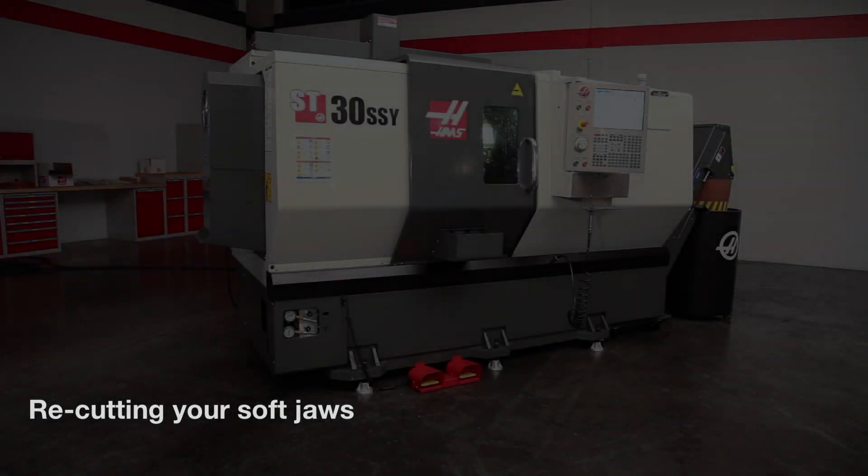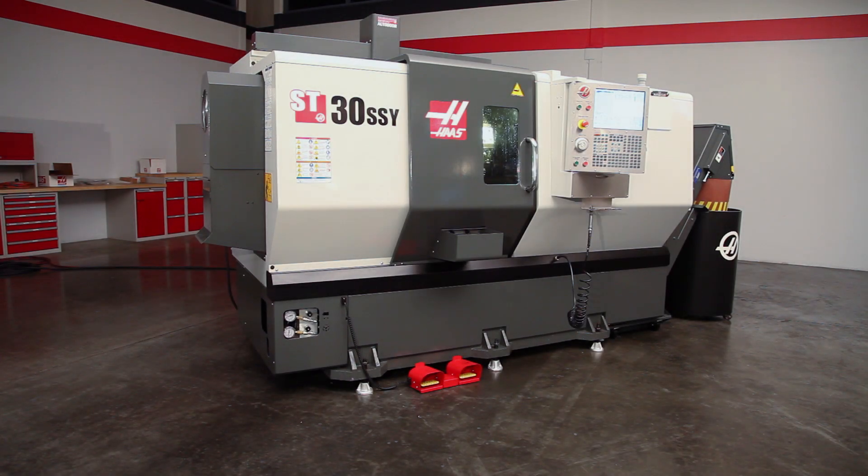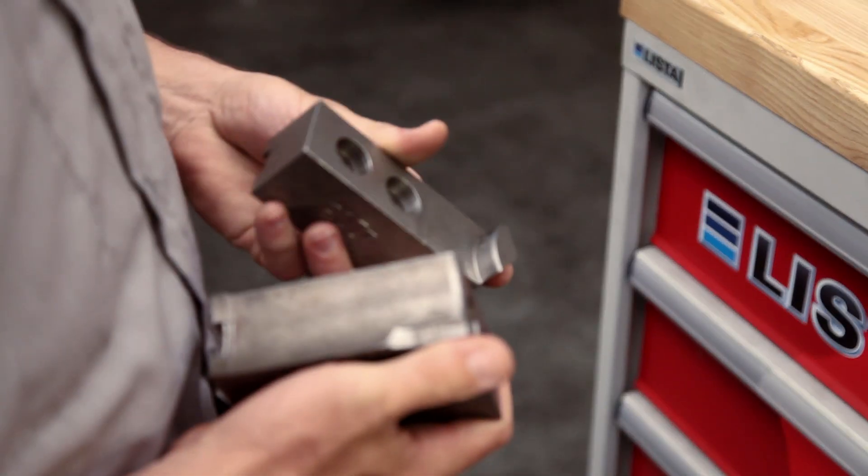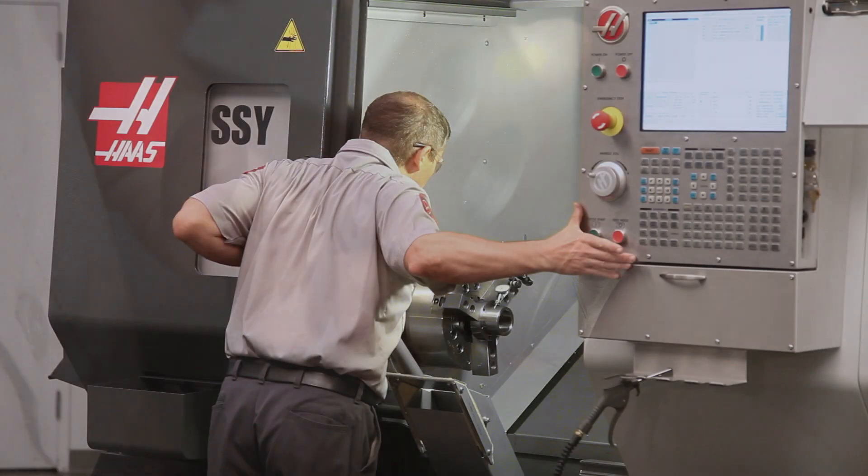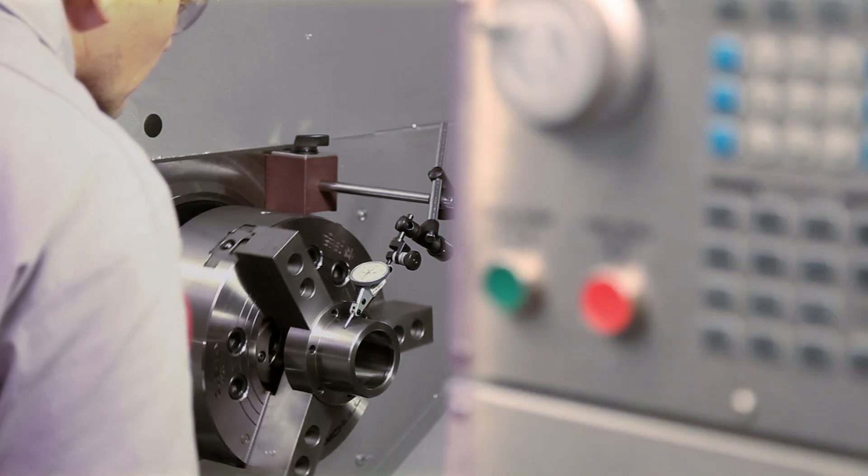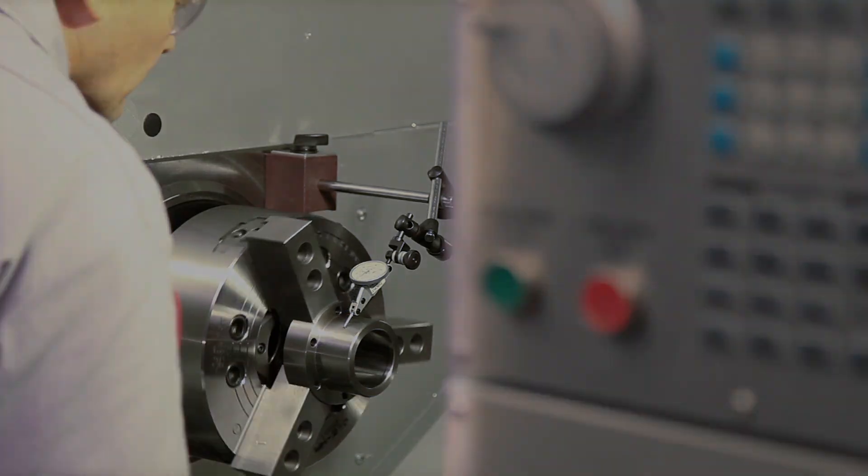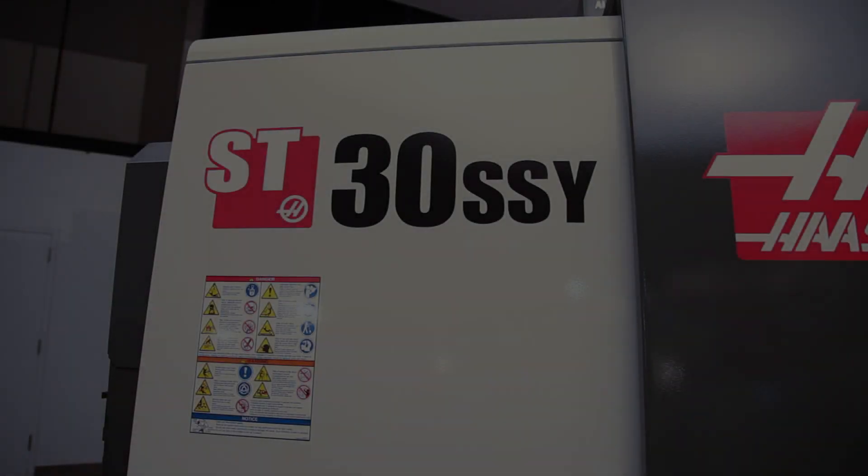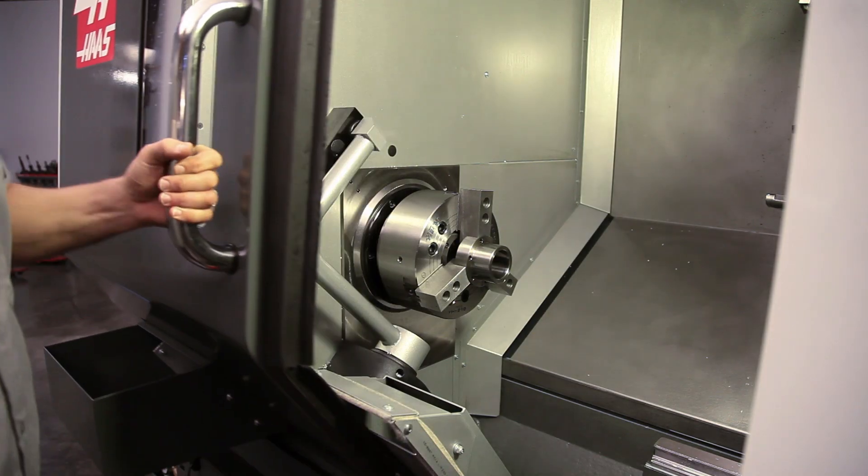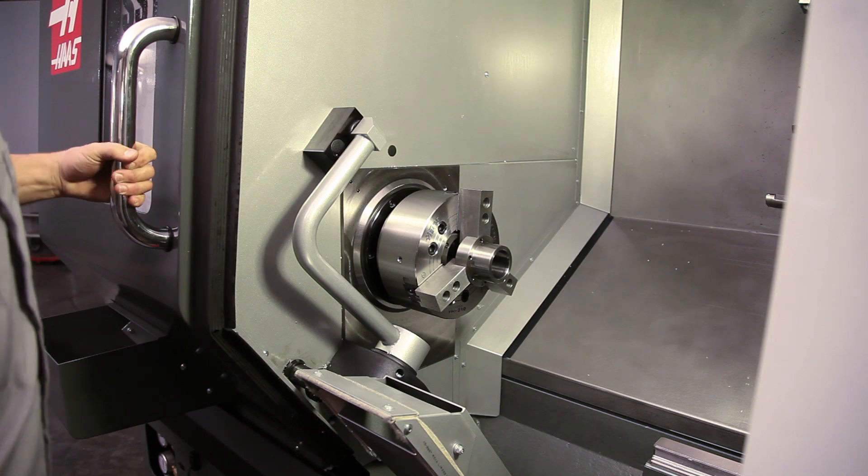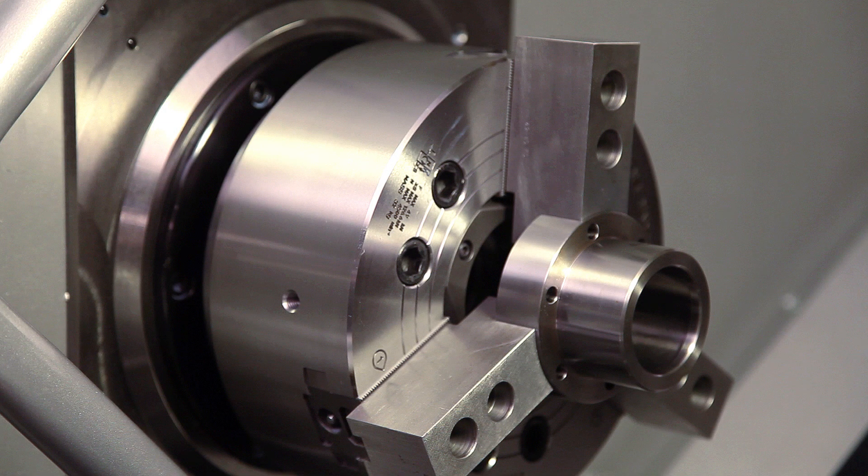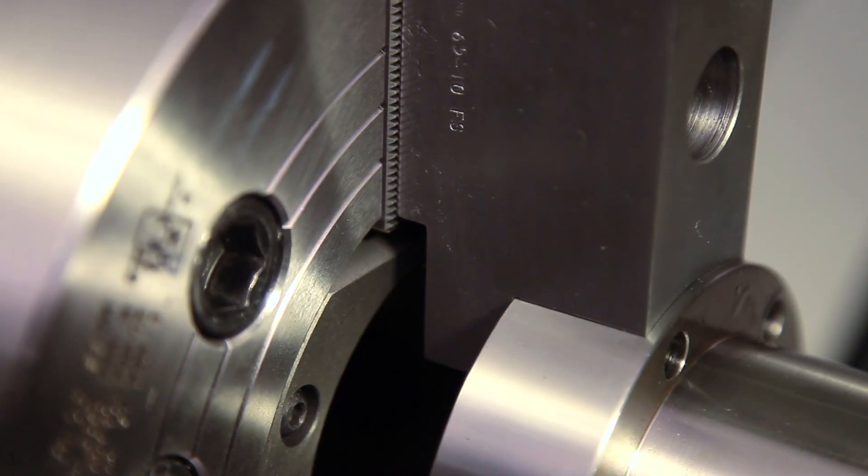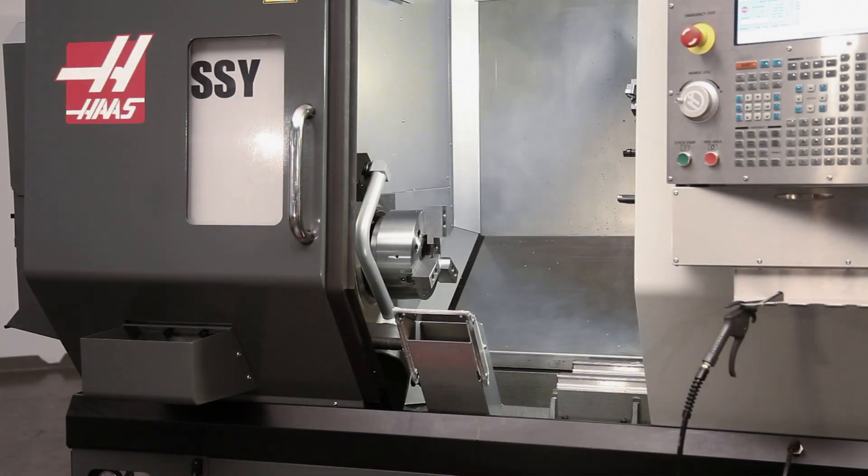There are many reasons to go back and recut your soft jaws. For example, your jaws might be worn or damaged. Or maybe your parts are beginning to creep out of tolerance. Andrew plans to reuse the jaws that were originally cut to hold our bearing housing part. Since he knows that he'll be using these same jaws, on this same machine, with this same chuck in the future, there is no need to recut.